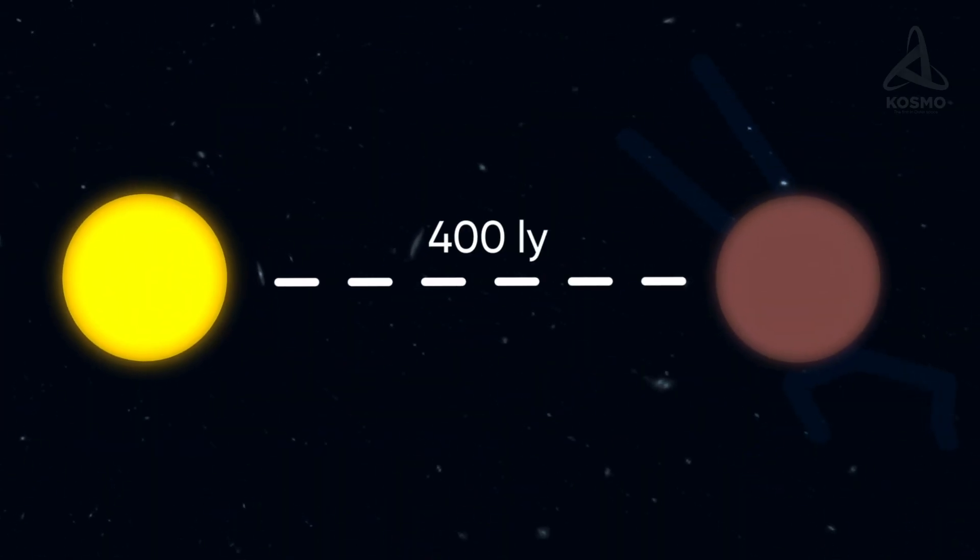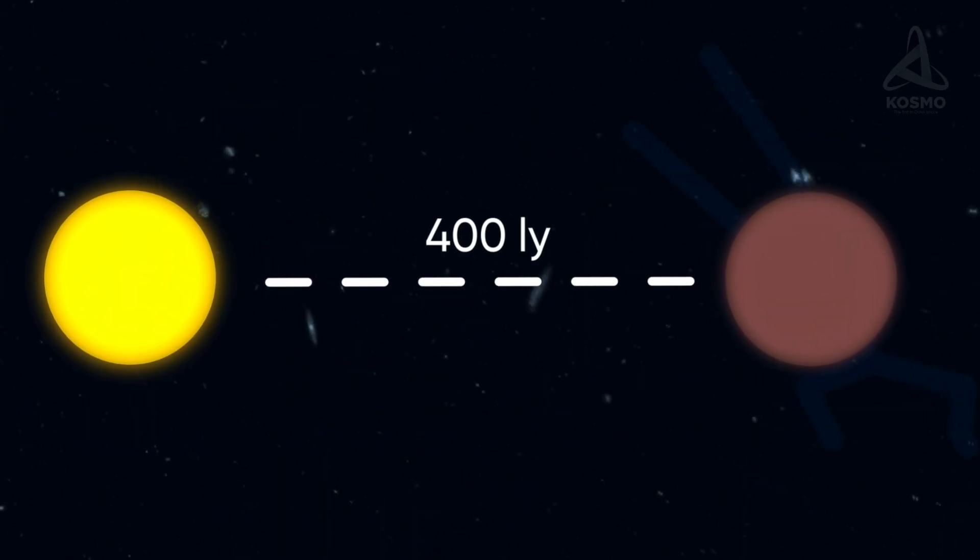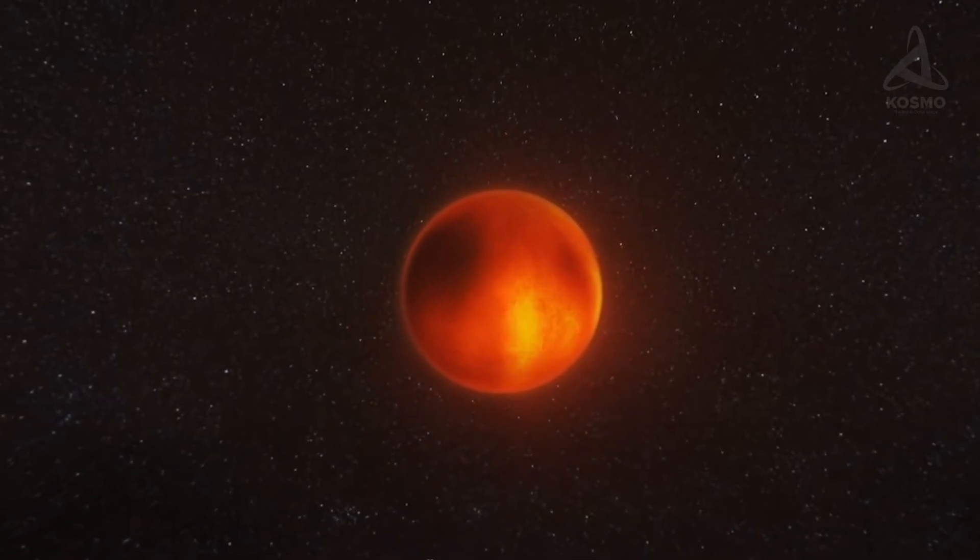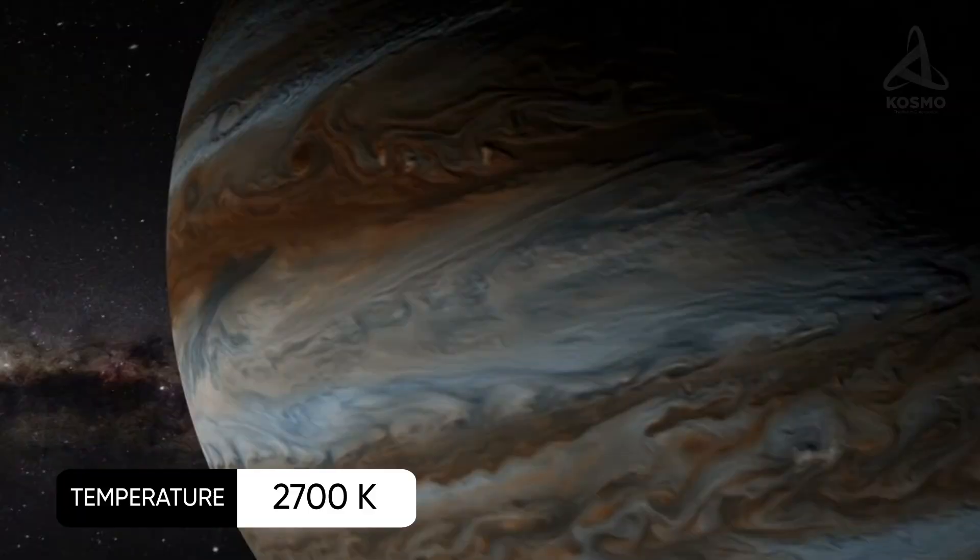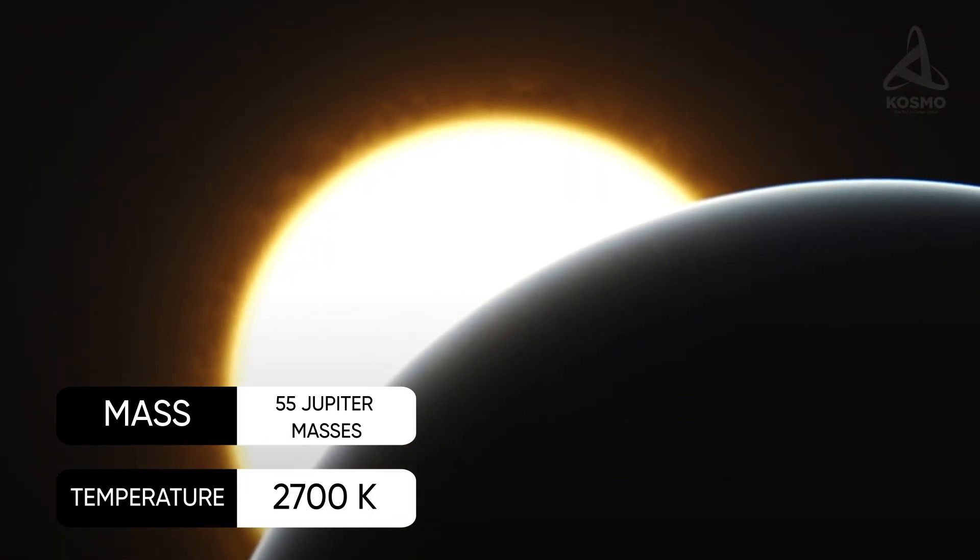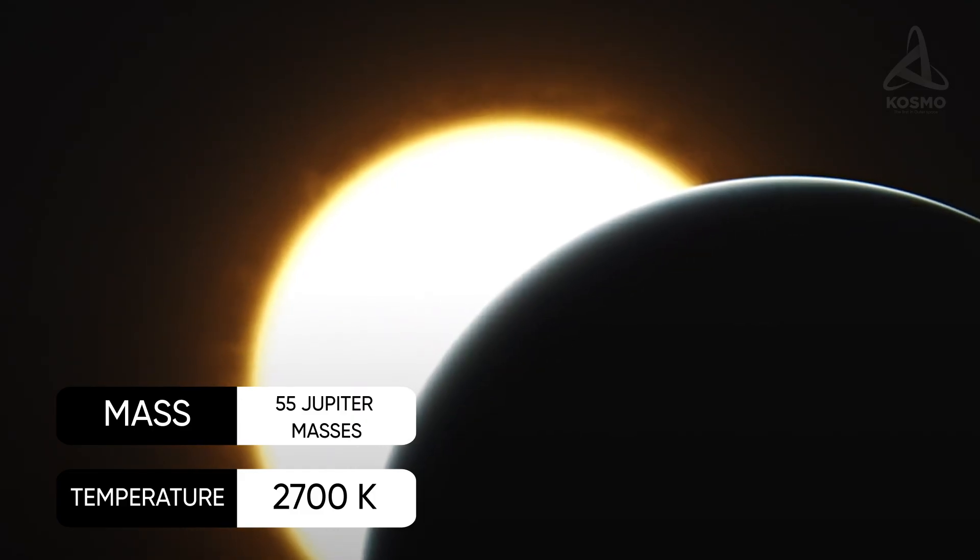It is located in the constellation Taurus, approximately 400 light years away from the Sun. Its surface temperature reaches 2700 degrees Kelvin, and its mass is 55 times that of Jupiter, or 5.2% that of the Sun.